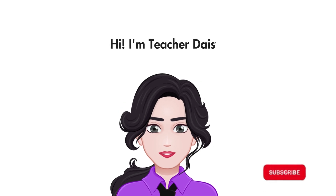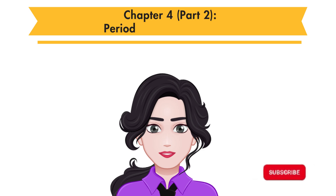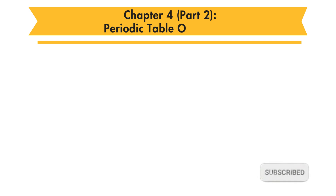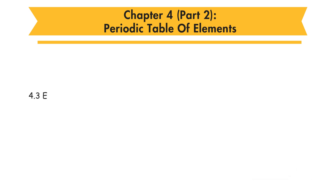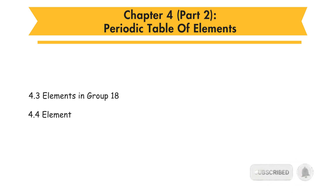Hi, I am Teacher Daisy. Now, let's learn Form 4 Chemistry Chapter 4, Part 2, Periodic Table of Elements. In this part, you will learn 4.3 Elements in Group 18 and 4.4 Elements in Group 1.